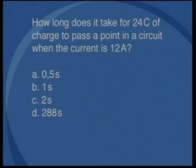Question number 6. How long does it take for 24 coulombs of charge to pass a point in a circuit when the current is 12 amperes? Will the answer be A, 0.5 seconds, B, 1 second, C, 2 seconds, or D, 288 seconds?